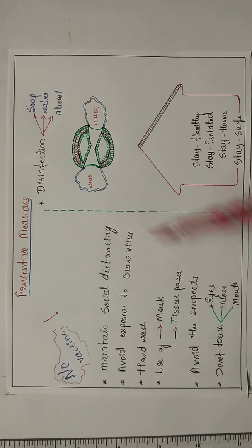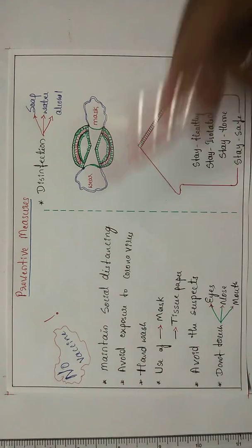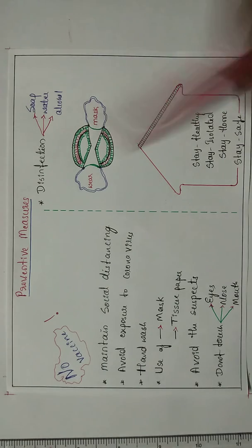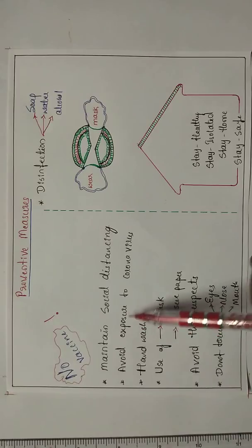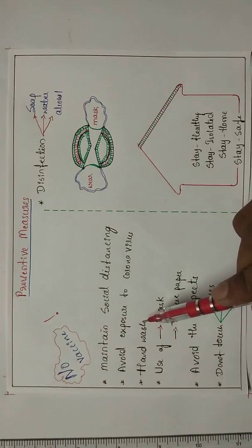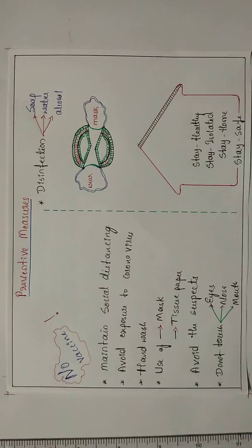We should keep the distance between person to person about one meter, whatever suggested by the government of India and the government of Karnataka. We should not enter into the crowd or the fair. While purchasing, we should maintain the distance and we should avoid the exposure to the coronavirus. Whenever the person is suspected, then we should avoid such persons.